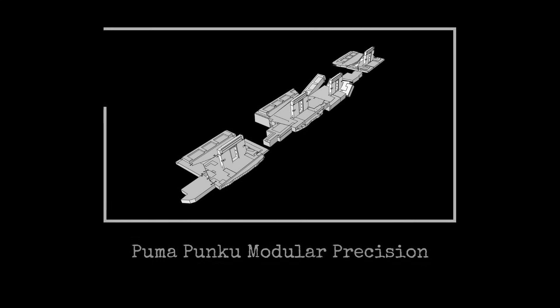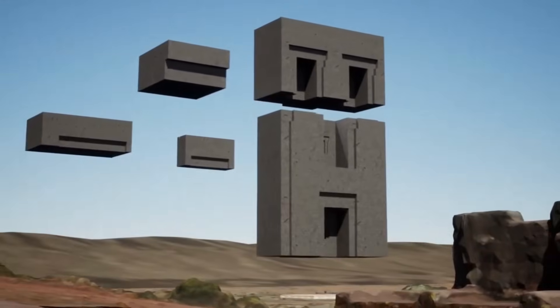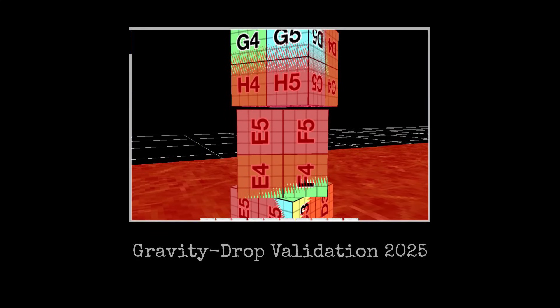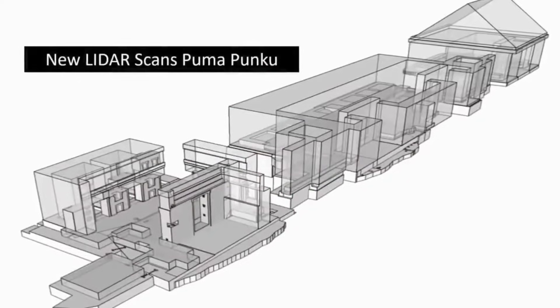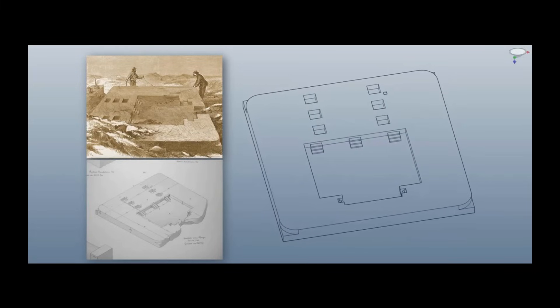This level of precision confirmed that the H-blocks and profile elements were designed to fit together in modular arrays, supporting the idea of a planned, standardized build rather than ad-hoc construction. Gravity drop simulations within the software showed that, when allowed to settle, the virtual blocks nested stably and locked together, echoing the physical resilience of the original platform.